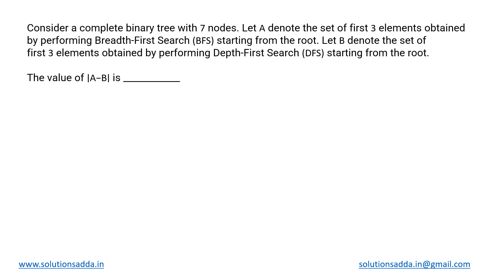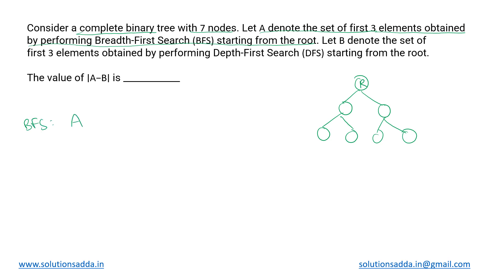This is a data structures question based on the tree data structure, discussing a complete binary tree with seven nodes. Since it is complete, every node will have two children, giving us this structure. Let A denote the set of first three elements obtained by performing a breadth-first search starting from the root. Let us call this root r. We label the other nodes one through six.